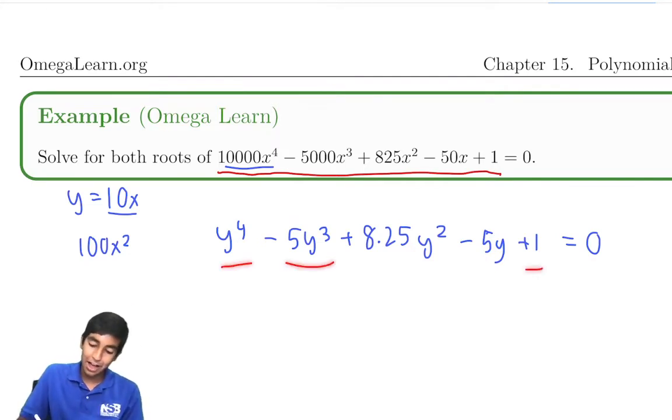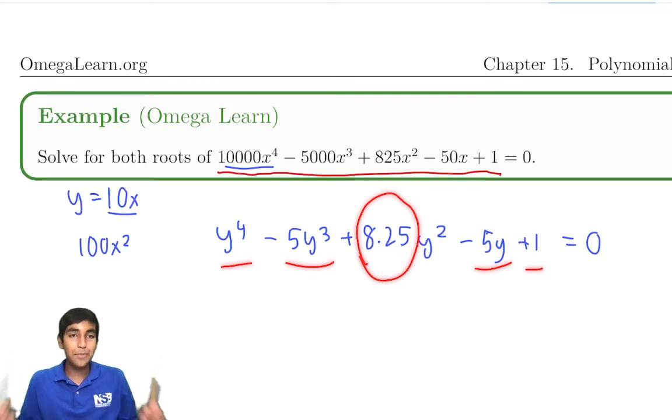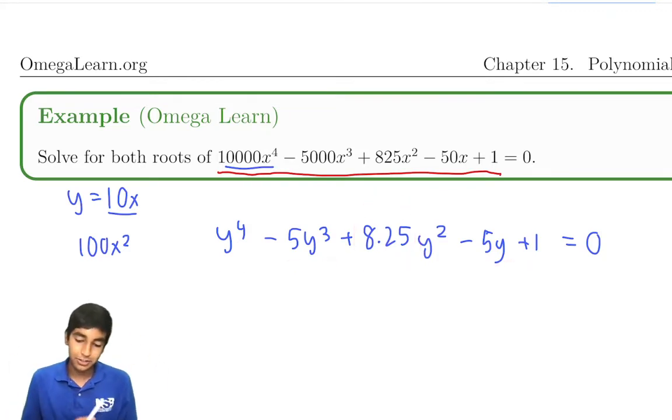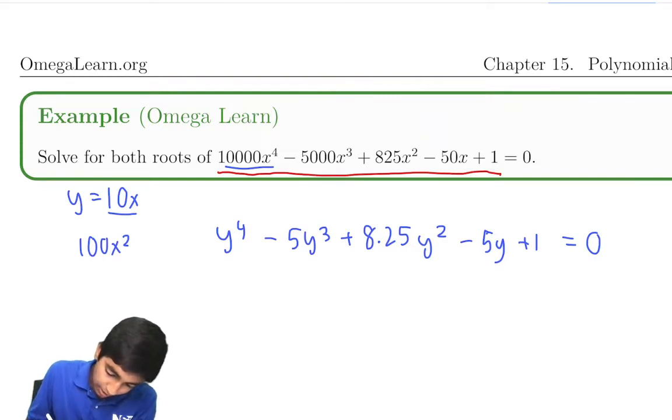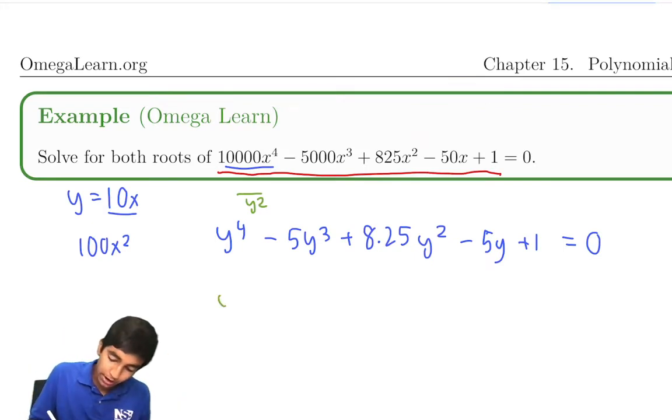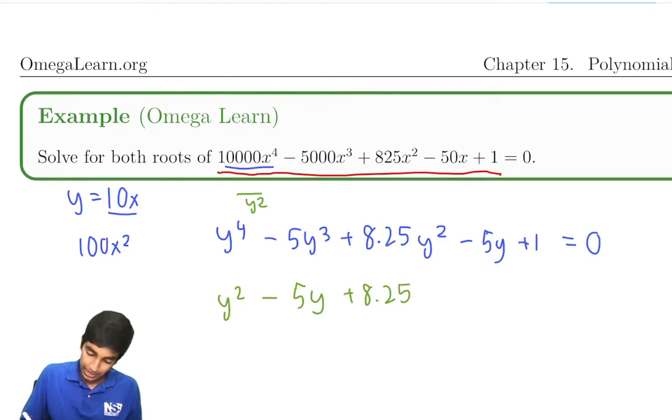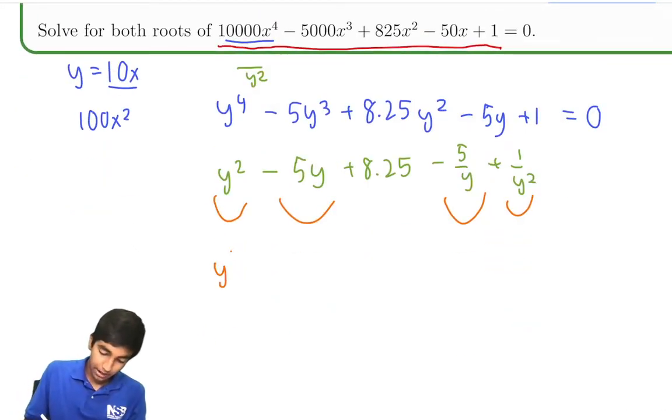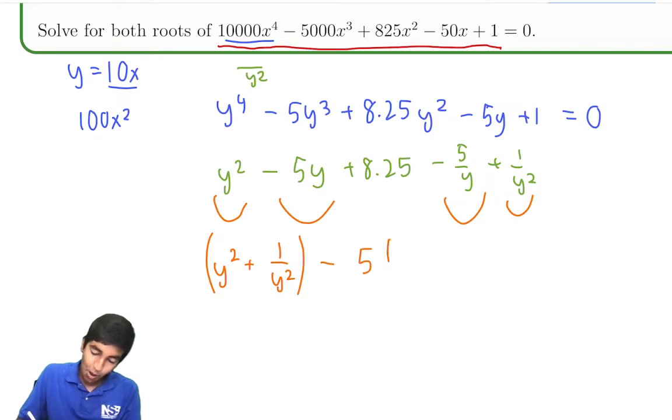We must divide by y² to the whole polynomial. 0 divided by y² is just 0. So we have y² - 5y + 8.25 - 5/y + 1/y². Now we group these terms together and these terms together. This gives us (y² + 1/y²) - 5(y + 1/y) + 8.25.